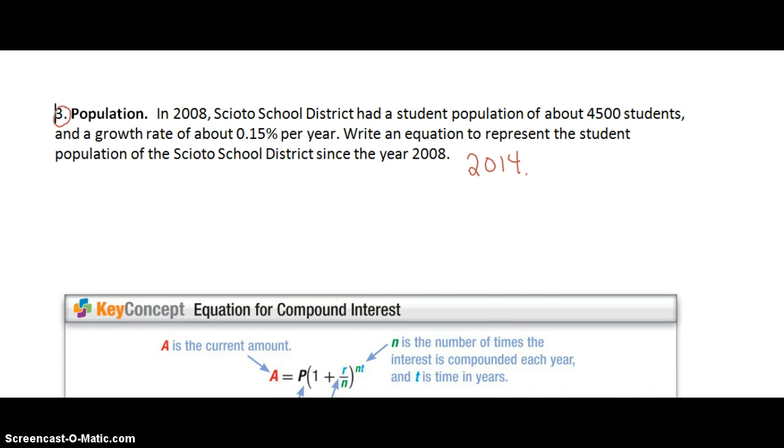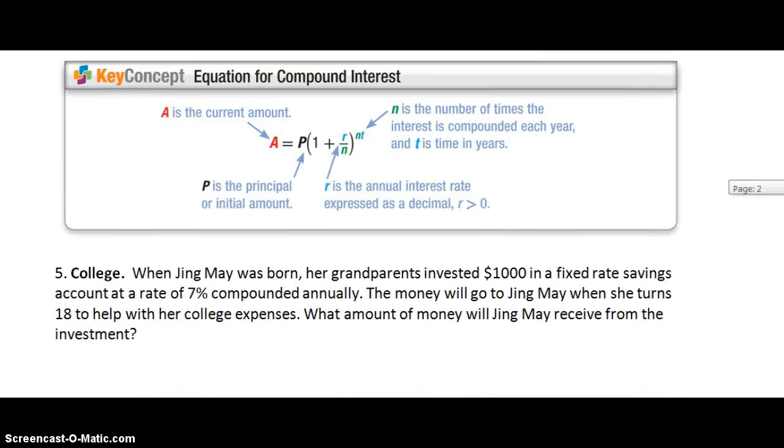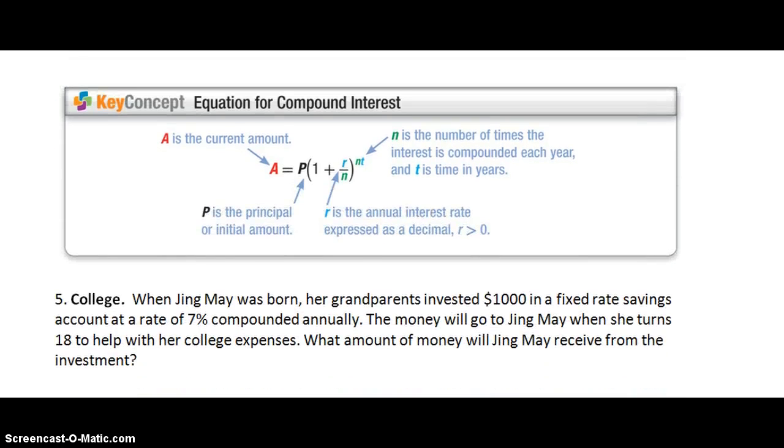Let's take a look at our next key concept which is compound interest. Our last equation was exponential growth. This one is more specific in compound interest. With compound interest we have one new variable added which is N. N is the number of times the interest is compounded each year and T still represents the time in years. R, P, oh and P is different as well. P is our principal or initial amount.